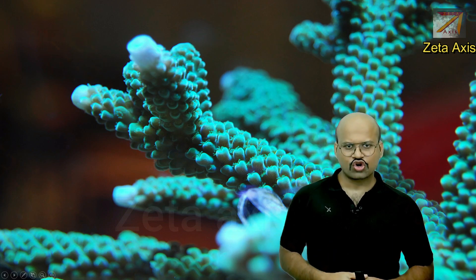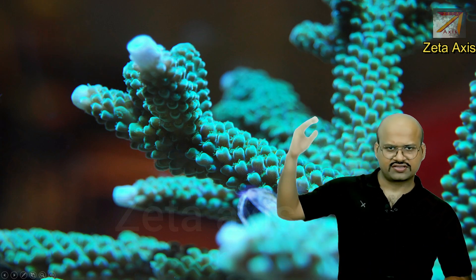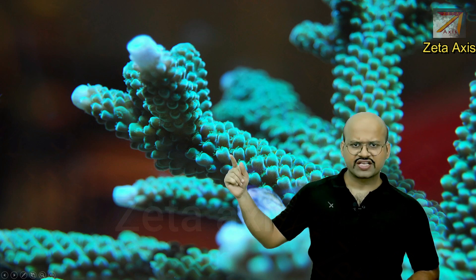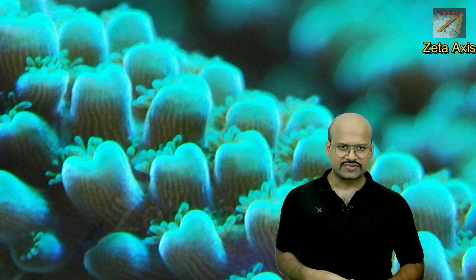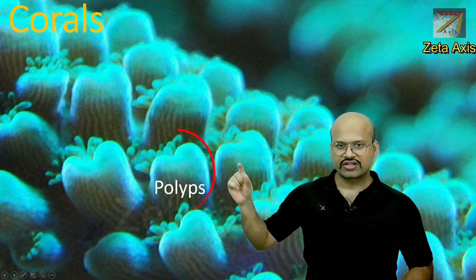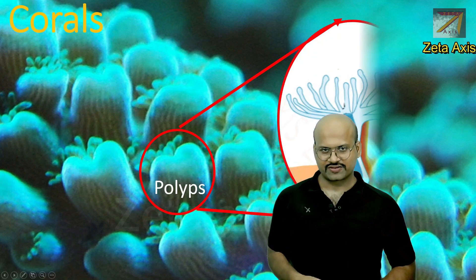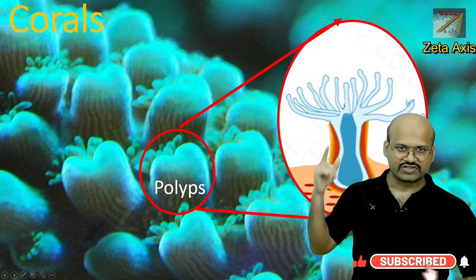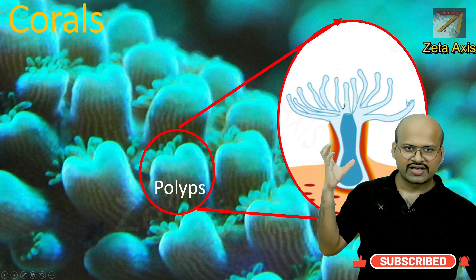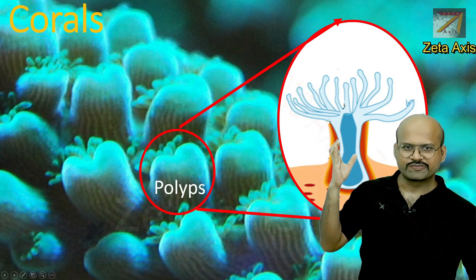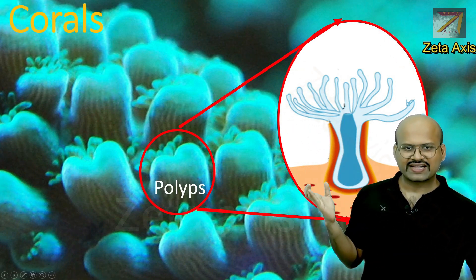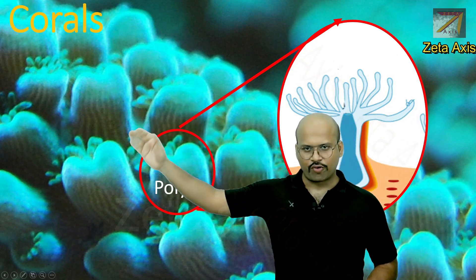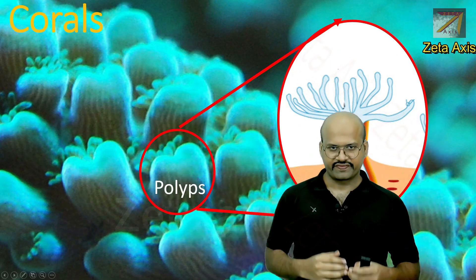Here we can see a coral reef. These branches are coral reefs and here we can see these small nodule-like structures. If we zoom in, we can see that each of these are polyps — the small organisms which form these coral reefs. This is a diagrammatic representation of coral reefs. These are the tentacles, here is the mouth, and the body of this polyp is attached to the calcium carbonate substrate. A colony of polyps is what forms the coral reef.